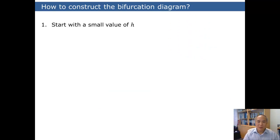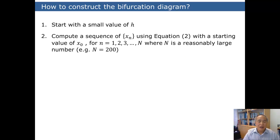How do we construct a bifurcation diagram? We start with a small value of h, and then we compute a sequence of x_n. Starting with a value of x_0, we find x_1, x_2, x_3, and so on, until we reach a large number, say 200. This is to ensure that we are close to convergence, if not have reached convergence.